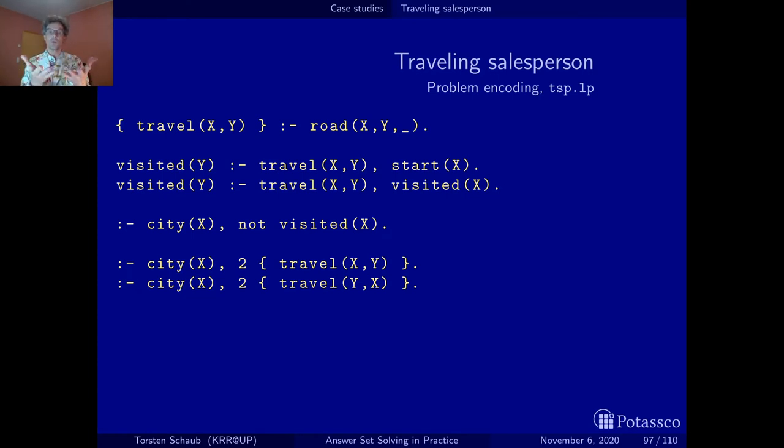So what we compute here is a Hamiltonian circuit. Now we want to make sure that our solution guess also gives us an optimum solution. Optimization simply identifies among all solutions the best solutions. And what is best here is simply the shortest route. We have two alternative ways to describe this in ASP. One are weak constraints and the other are minimized statements. Let's look at both alternatives.